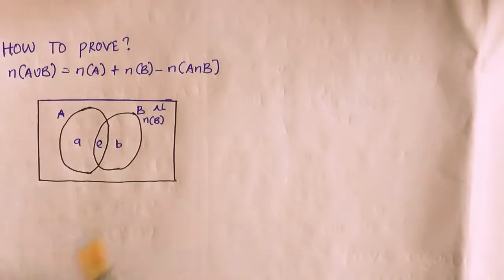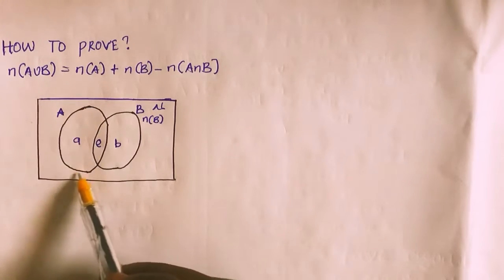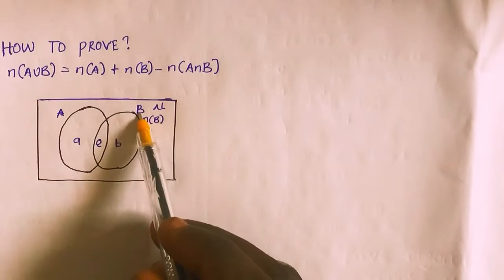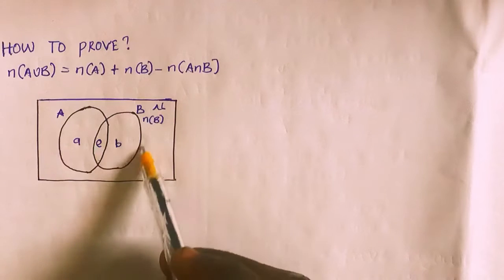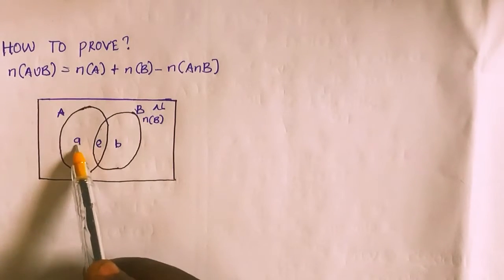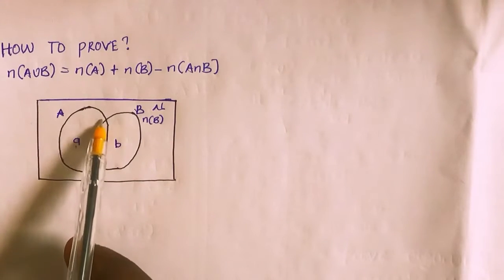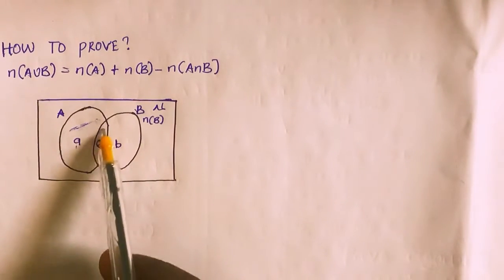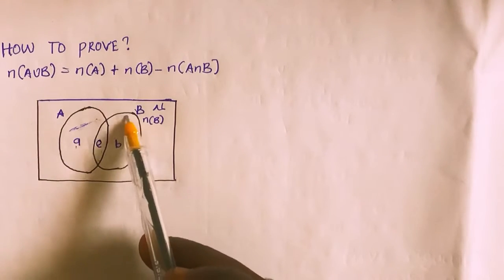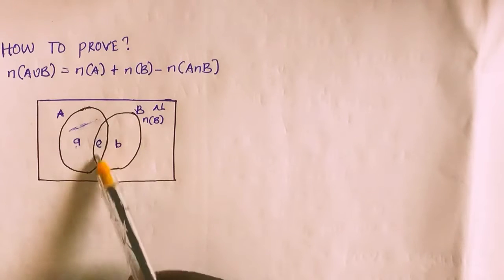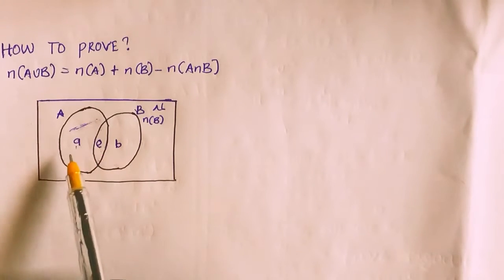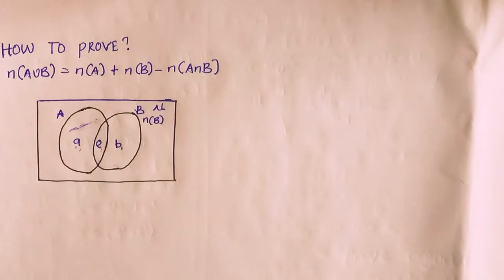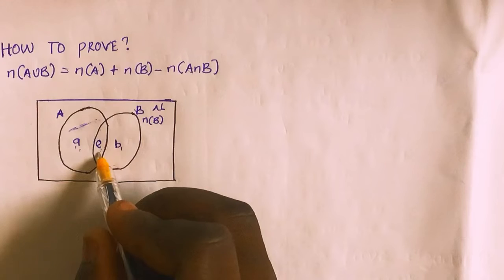In this case, my A represents all the elements present in the first circle, which is set A. My B represents all the elements present in the second circle, which is set B. And my E represents the intersection between A and B — that is where the first circle and the second circle meet.